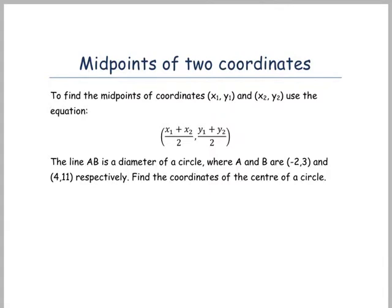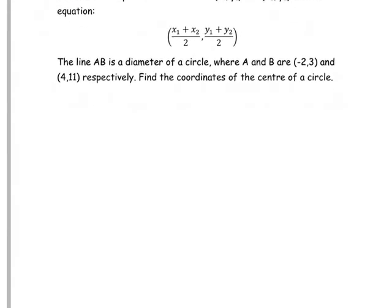The reason this could be useful when looking at circles is if we have a line AB, which is the diameter of a circle, where A and B are (-2, 3) and (4, 11) respectively, you can find the coordinates of the centre of a circle.